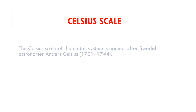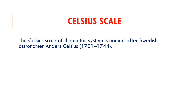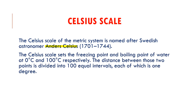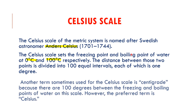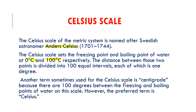The Celsius scale of the metric system is named after Swedish astronomer Anders Celsius. The Celsius scale sets the freezing point and boiling point of water at 0 degrees Celsius and 100 degrees Celsius respectively. The distance between these two points is divided into 100 equal intervals, each of which is 1 degree. Another term sometimes used for the Celsius scale is centigrade, because there are 100 degrees between the freezing and boiling points of water, but the preferred term is Celsius.